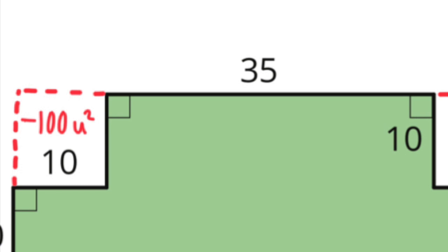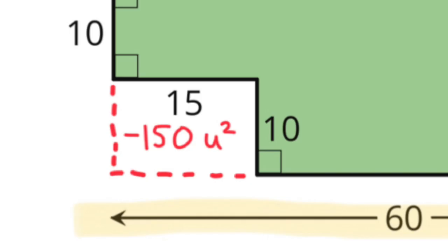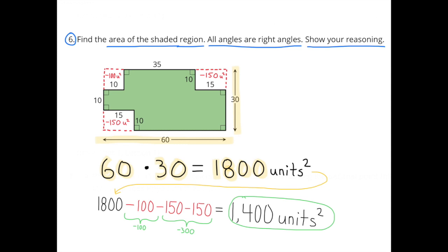And I notice in these corners there's little sections that are removed. One section is a 10 by 10 section, so that would be subtracting 100 units squared. Then there are two other sections that are 10 units by 15 units, so each of those would be subtracting 150 units squared, because 10 times 15 equals 150. 1,800 minus 100 minus 150 minus another 150 equals 1,400 units squared. The area of the shaded region is 1,400 units squared.